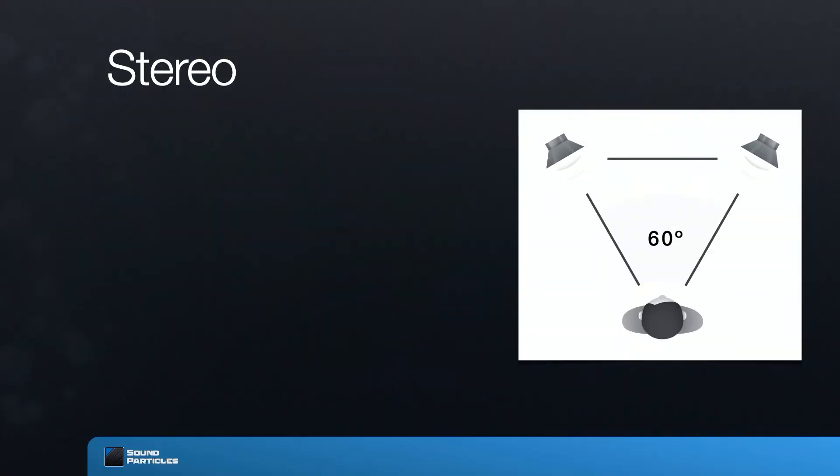If you want to have some kind of space in terms of audio, the most basic approach is of course using stereo — using two speakers. If you send the exact same audio to both speakers, you are going to perceive the sound as coming from the center, creating a phantom image. It looks like the sound is coming from the center in between the speakers, but actually there is nothing there.